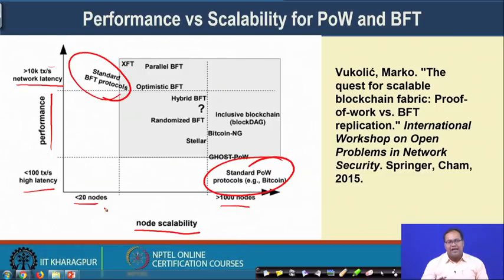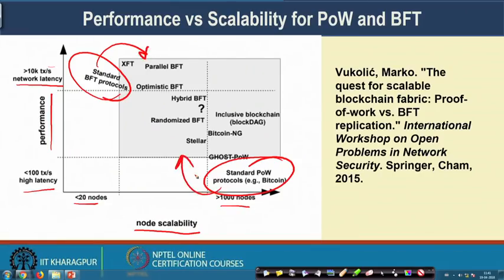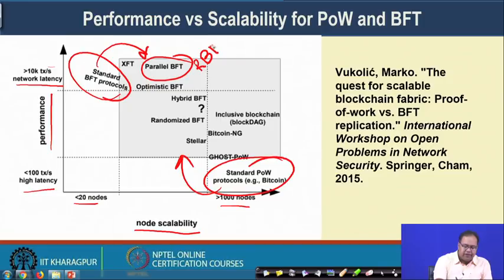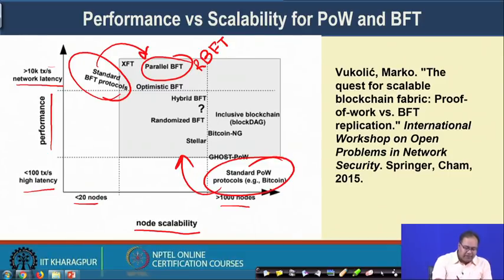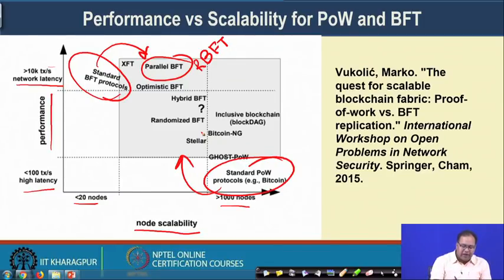There are multiple variants that have come from both directions, where researchers have tried to find scalable consensus for a Blockchain environment. Multiple variants of BFT have been proposed: Parallel BFT — which includes the RBFT algorithm seen in Hyperledger — Optimistic BFT, Hybrid BFT, and Randomized BFT. These protocols make modifications on top of standard BFT to make it more scalable in terms of the number of nodes supported.